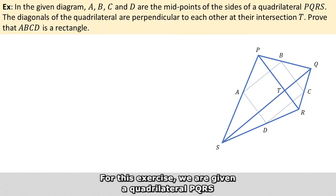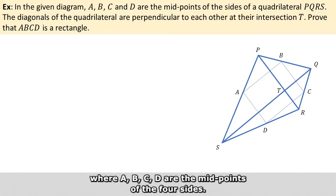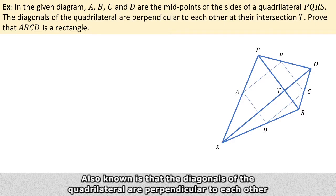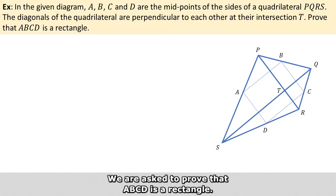For this exercise, we are given a quadrilateral PQRS, where A, B, C, and D are the midpoints of the four sides. Also known is that the diagonals of the quadrilateral are perpendicular to each other. We are asked to prove that ABCD is a rectangle.